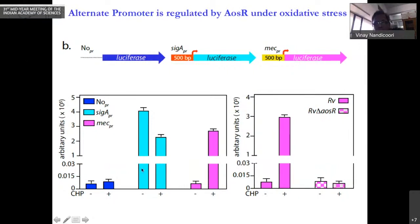In case of Sigma A promoter, there is, if at all, a slight decrease upon oxidative stress. In case of the alternate promoter we have tested, it is clearly induced, and this induction is approximately 100-fold upon oxidative stress. And it is dependent on the transcription factor; in the mutant it is not induced. So this tells you there is an alternate promoter, and because of this alternate promoter we are getting induction of the rest of the genes.